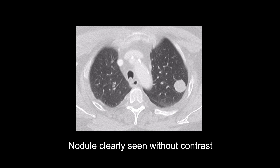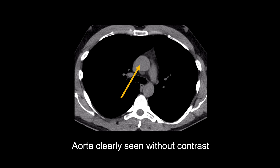Understanding these reasons for giving contrast also helps to know when it is not needed. If there is enough natural contrast to see what needs to be seen without injected contrast, then contrast won't be needed. For example, when assessing a lung nodule, contrast is not needed as the nodule is well-defined by the adjacent air-filled lung. When evaluating a dilated ascending aorta, the diameter of the vessel can easily be determined without contrast as it's well-defined by the adjacent mediastinal fat.